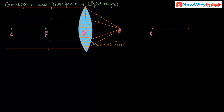This point is called the principal focus. All rays passing through the lens meet at this point — this is called the convergence point or principal focus, and this phenomenon is called convergence of light rays. Now, what is divergence? Let us see.